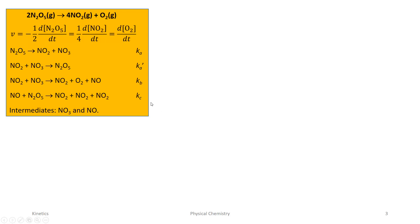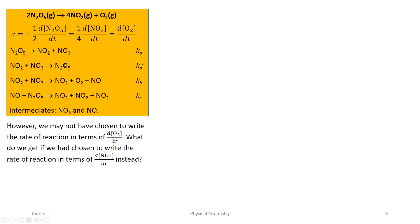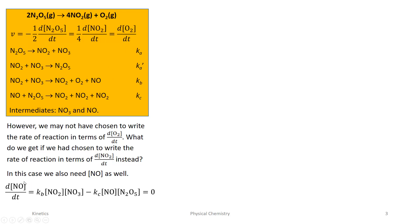But perhaps we had not chosen to work with the net rate of formation of O2, and instead chose nitrogen dioxide. If we had done that, we would also need to know the concentration of the intermediate nitrogen monoxide. The expression for its formation is more complex, but if we follow through the algebra correctly we should get exactly the same result. Let's do that.